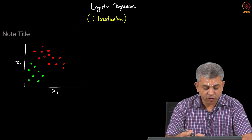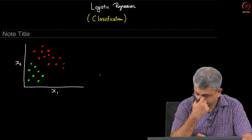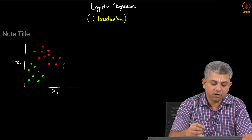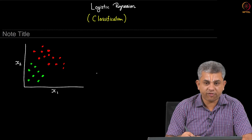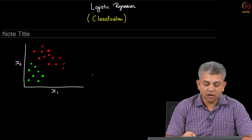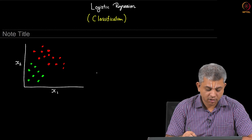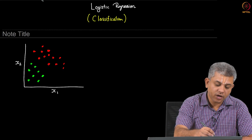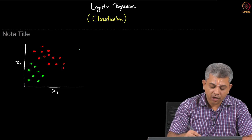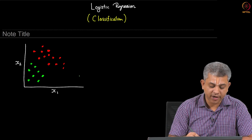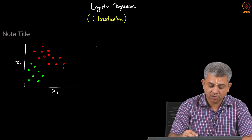In the previous videos we saw linear regression, which tries to fit an optimal — usually least squares — fit to some given data using weights which are linear. Now in this video we will look at the idea of trying to classify two different sets of data for binary classification.